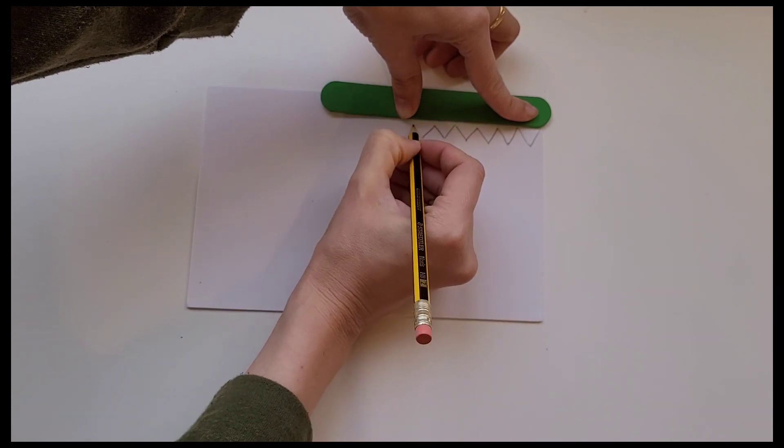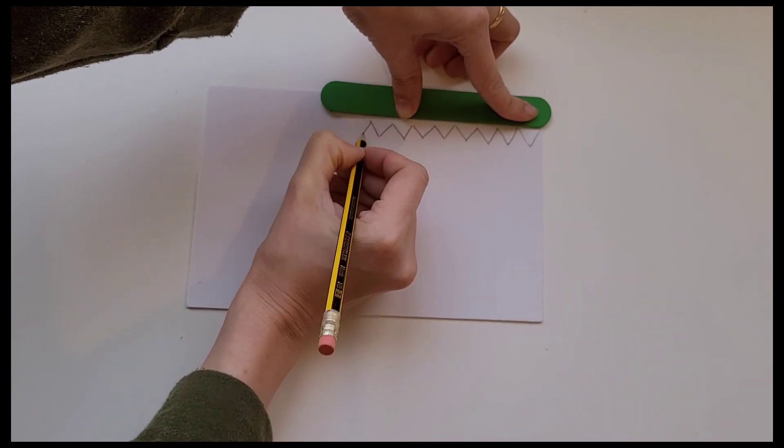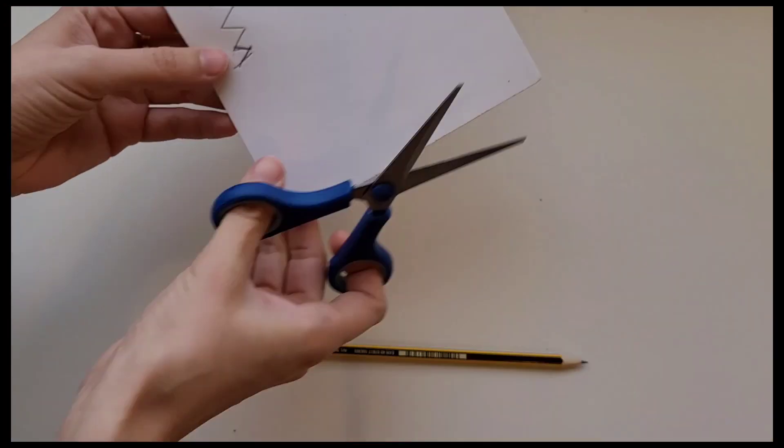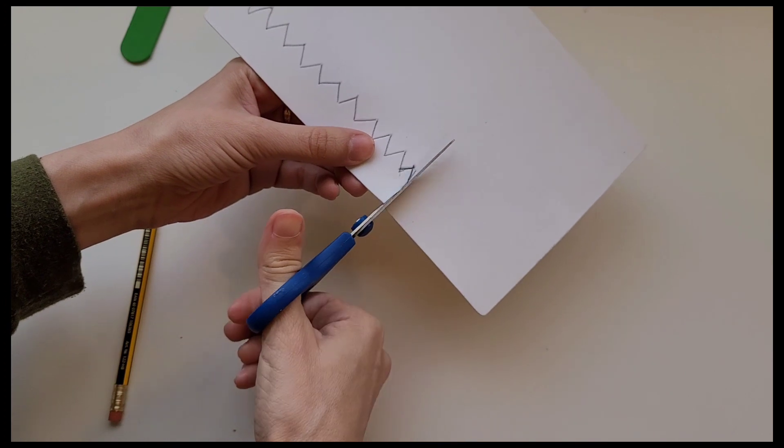We're going to use green craft sticks and then we're going to trace out some teeth on the white foam. After we trace out the teeth we're going to cut them out.